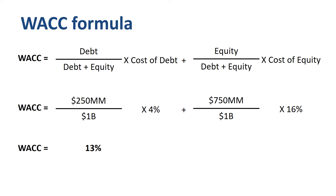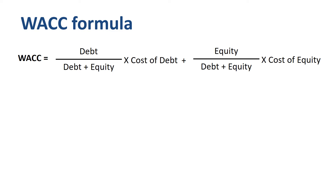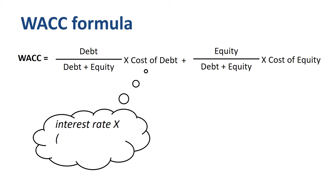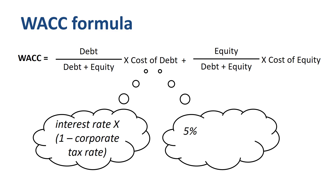So where does cost of debt and cost of equity come from? The first part is fairly easy to grasp. The cost of debt equals the interest rate that the company pays on its interest-bearing debt, minus the tax benefit of interest expense being deductible. So if the interest rate is 5% and the corporate tax rate is 20%, then the after-tax cost of debt is 4%.